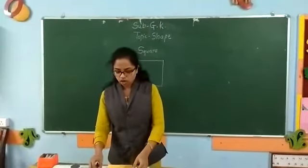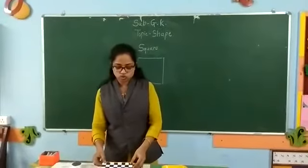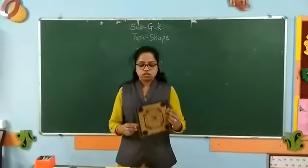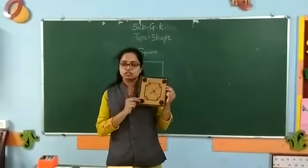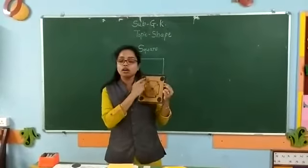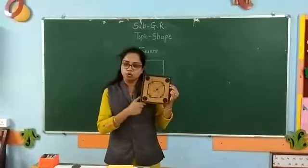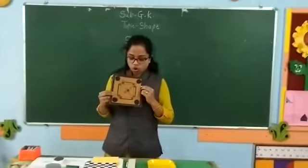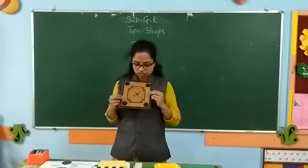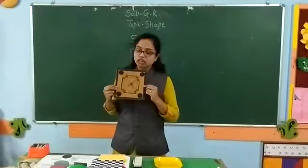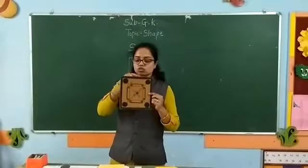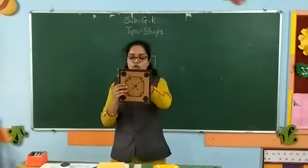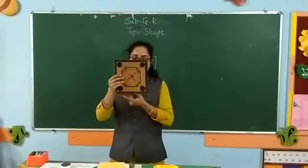Now I am going to show you some square shape objects. Look at this children — this is your carom ball. Carom is an indoor game. You all have played carom. This is a carom ball. It also has four sides and four corners.